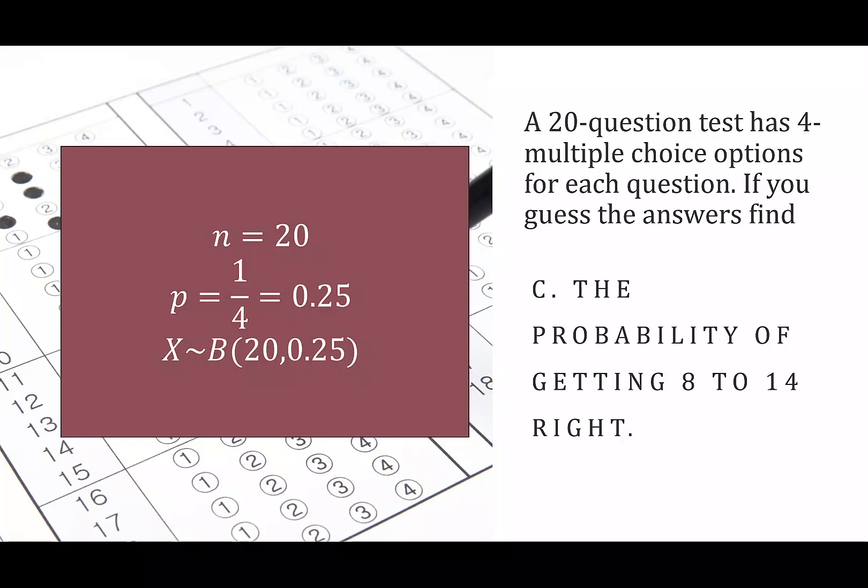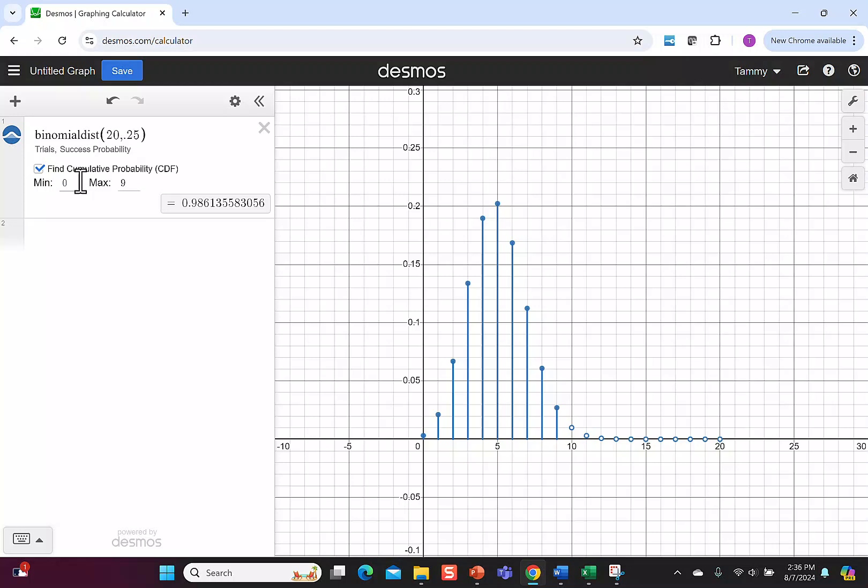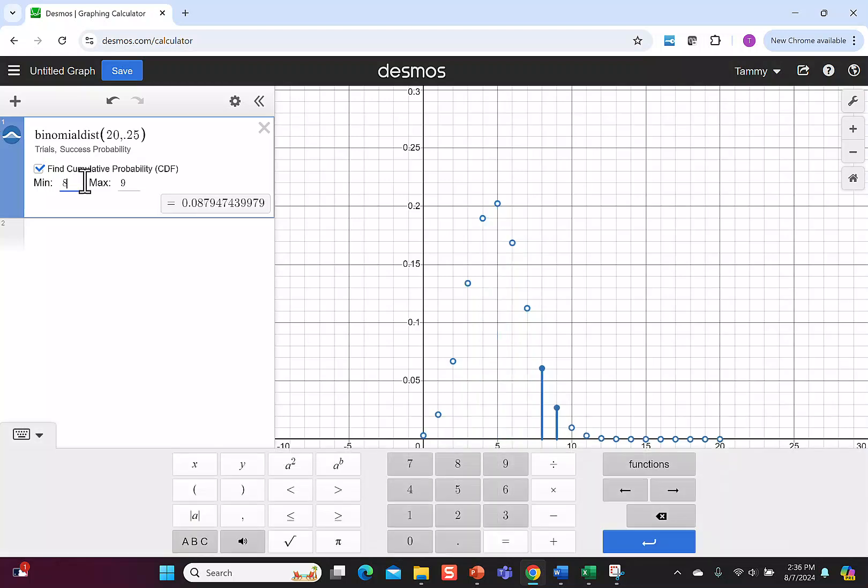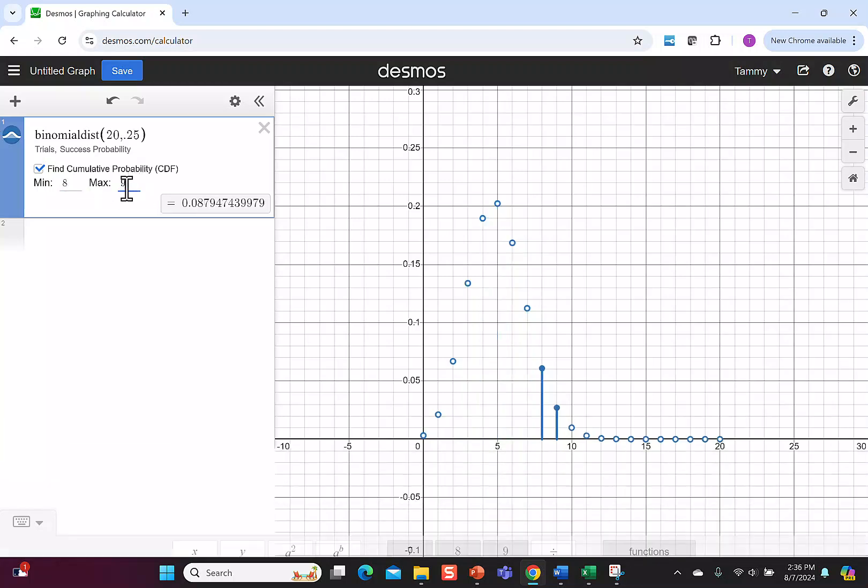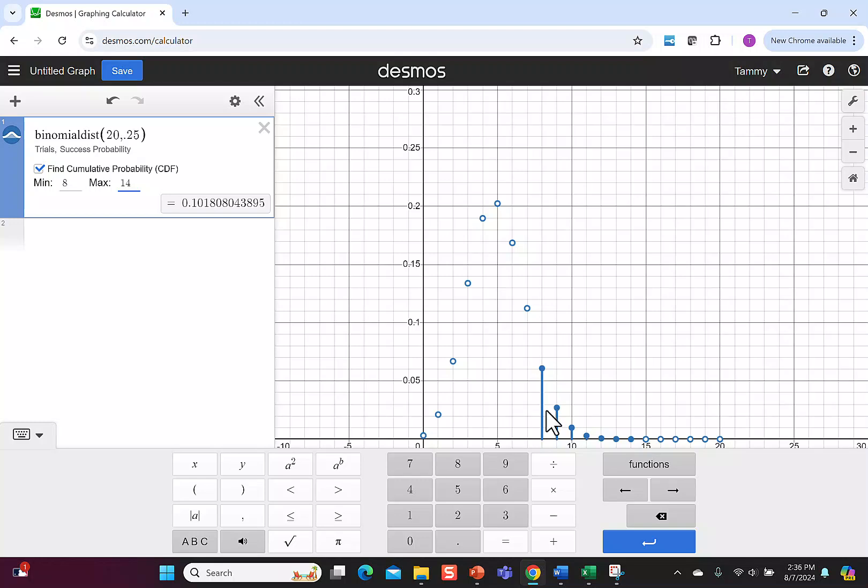The last one we'll look at today is the probability of getting 8 to 14 correct. Back in Desmos, my minimum is 8. My maximum is 14. Desmos is adding up all the ones from 8 to 14, and it gives us 0.1018.